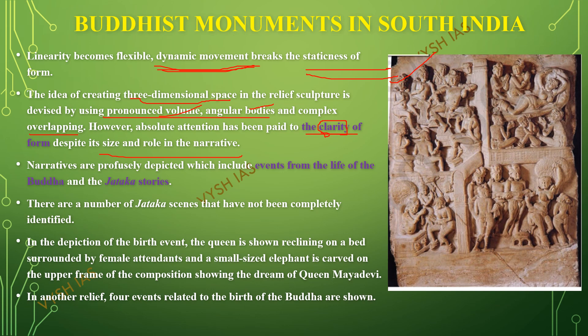There are a number of Jataka scenes that have not yet been completely identified. We know some Jataka stories like the Ruru Jataka and the Maya Devi dream. In one scene, the Queen Maya Devi is reclining on a bed surrounded by female attendants, and a small elephant is carved on the upper frame showing her dream. In another relief, four events related to the birth of the Buddha are also shown.